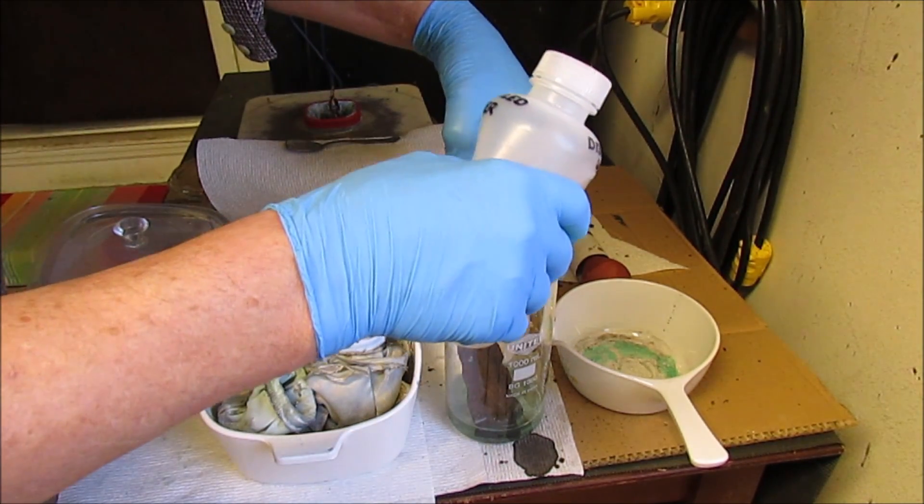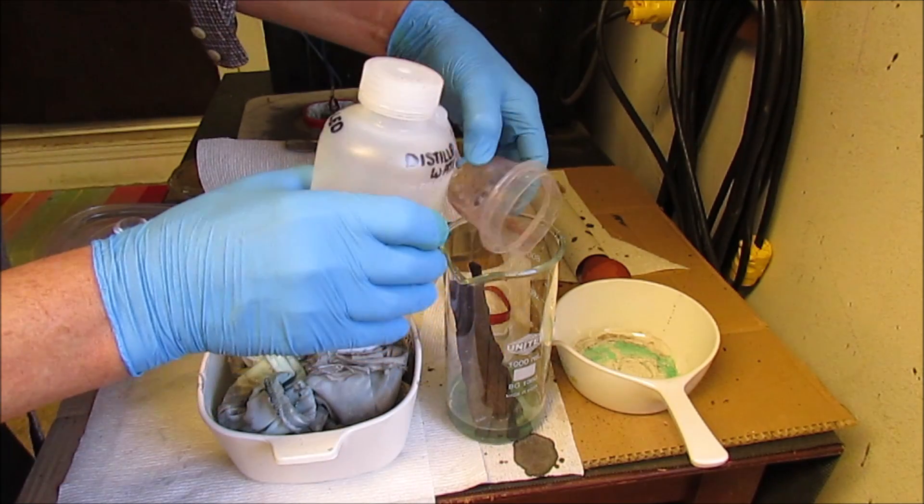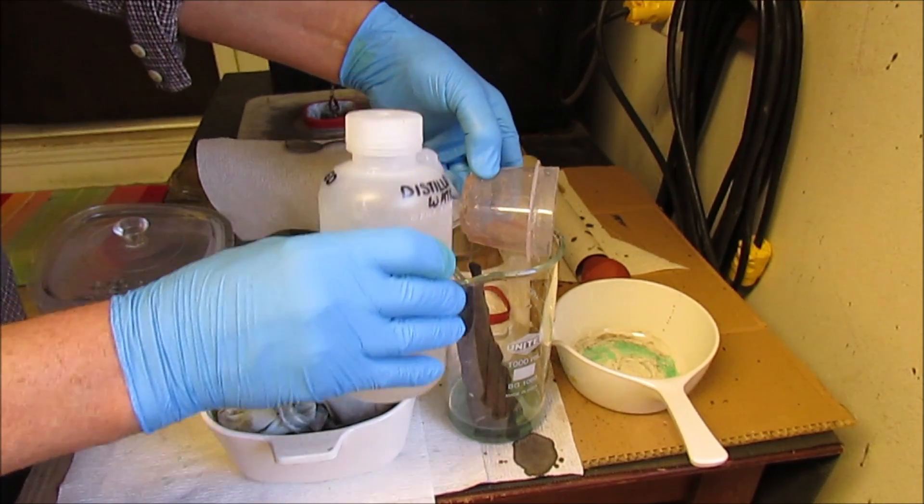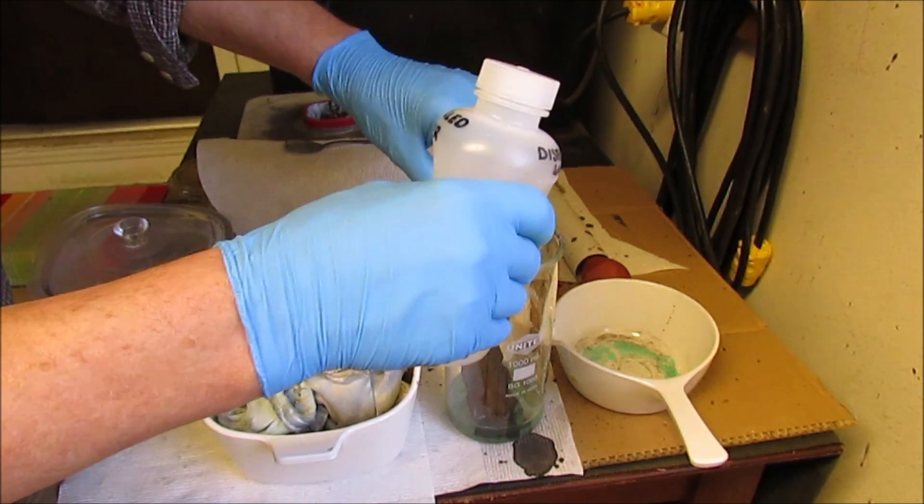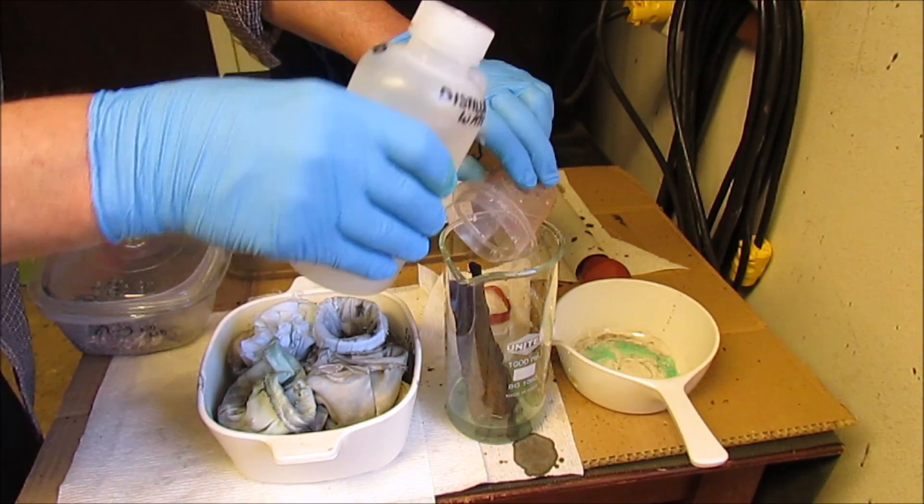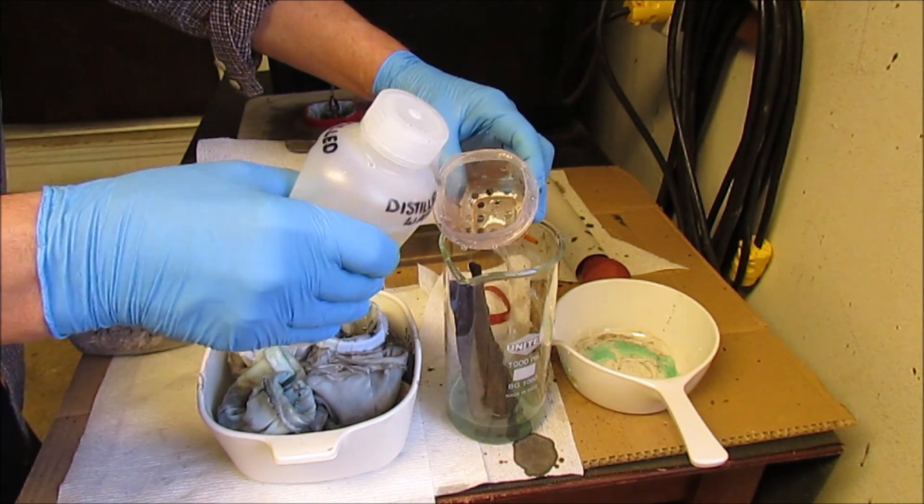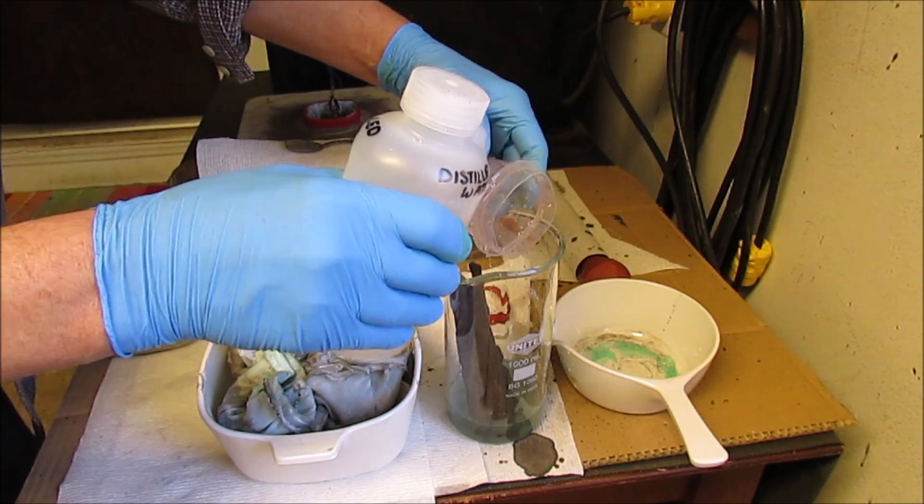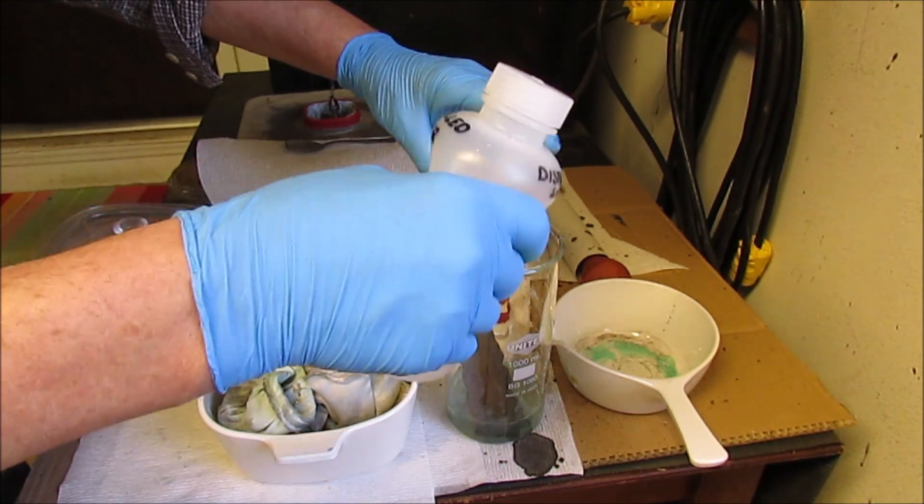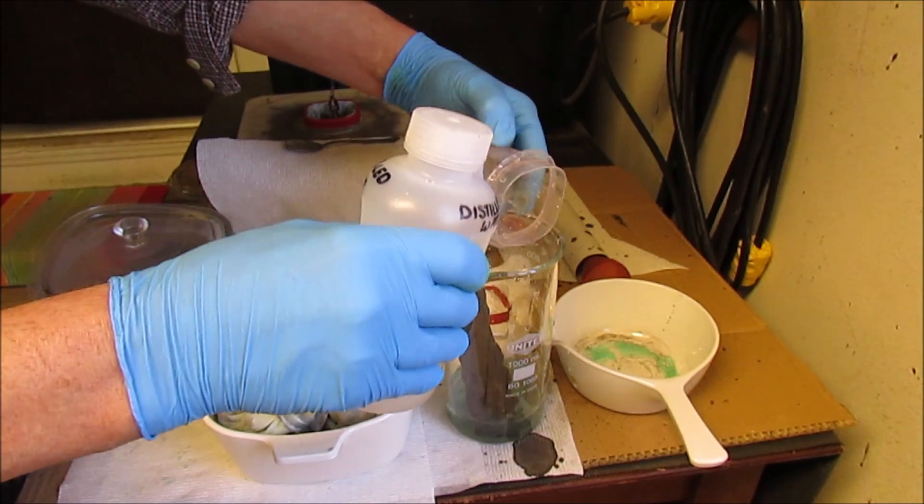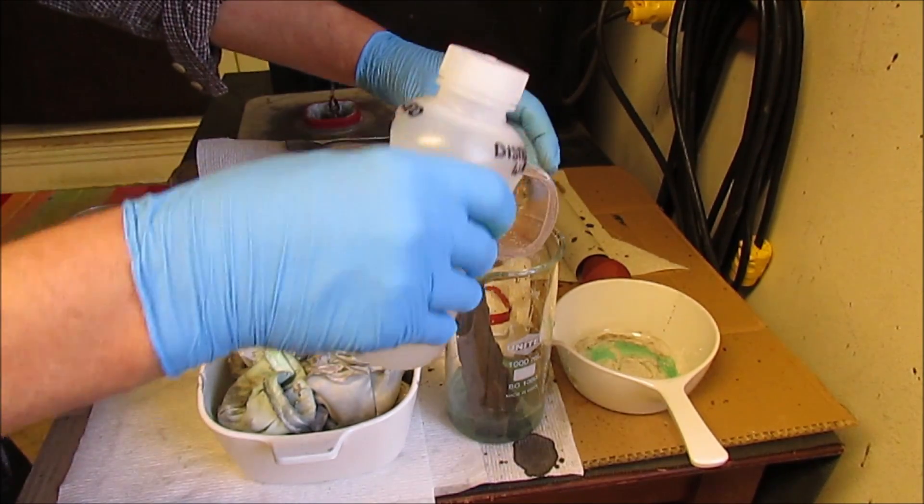Right now I'm trying to rinse these silver nitrate crystals off of this anode basket here into this beaker that's got some copper in it so that I can save and recover the silver.